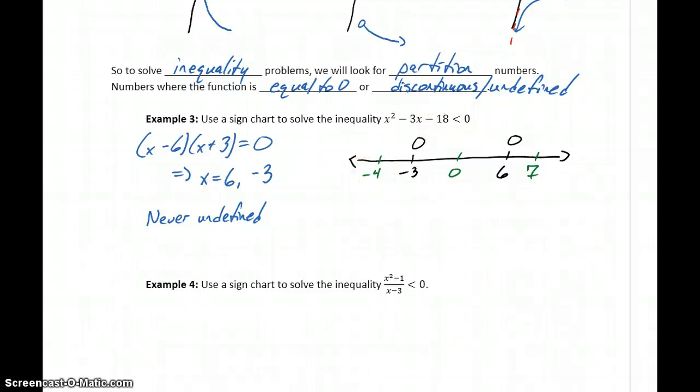So if we evaluate x² - 3x - 18 < 0 at negative 4, that result would be 10. If we evaluate this expression at 0, we would get a value of negative 18. And if we plug in 7, we would get a value of positive 10.